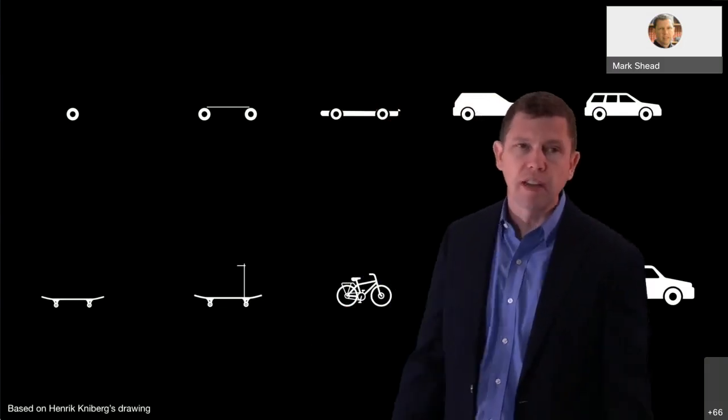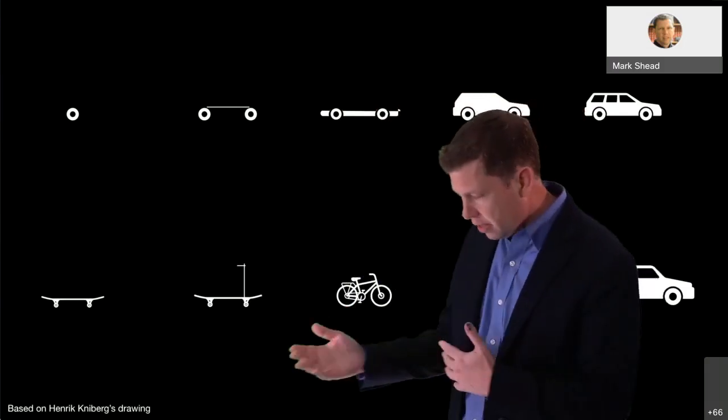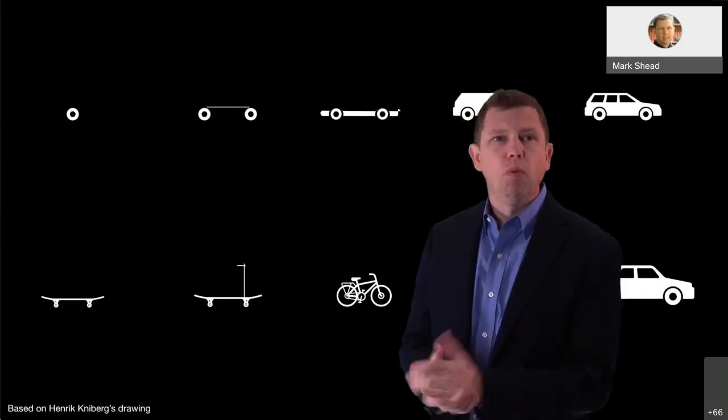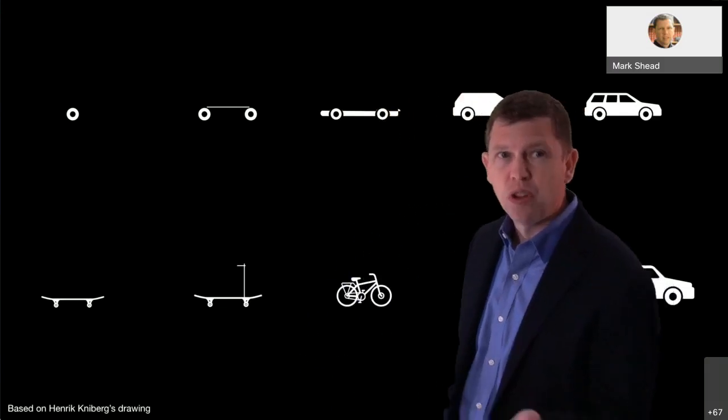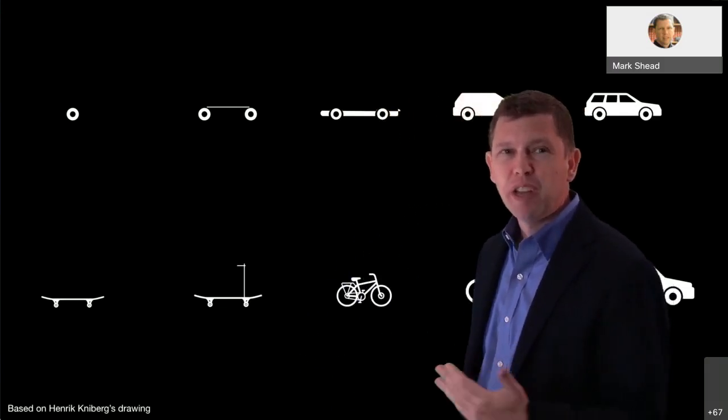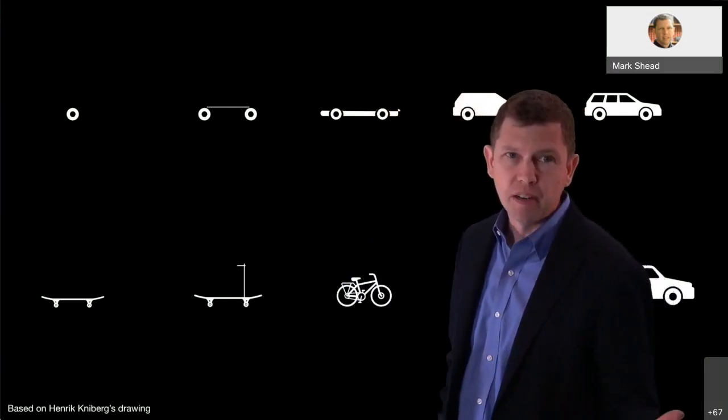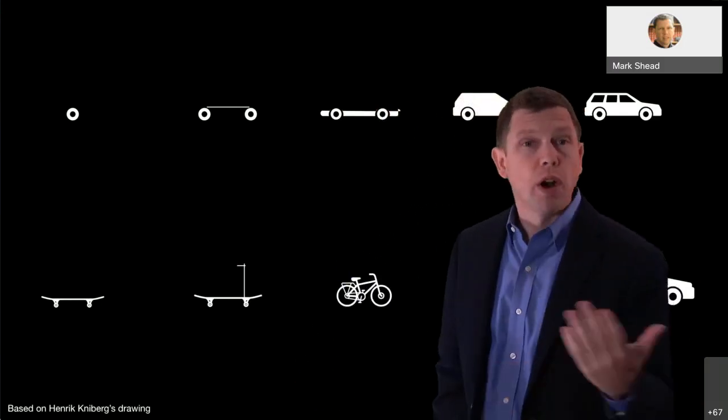Like, hey, that works pretty good. I can get back and forth to the school. This works well. What else can we do to make it better? And they may say, well, this works great for the school, but I'm not really comfortable taking the skateboard to the other places I need to go. And so then conversation, like, well, where else do you need to go?